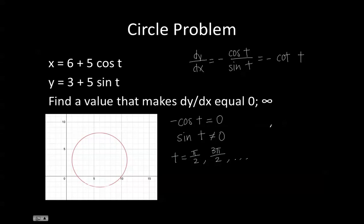For the next part of the problem, we're going to find the value that makes dy/dx equal to infinity. In this case, we want cosine t not to equal 0 and sine t to equal 0. When sine t equals 0, our dy/dx is infinite.